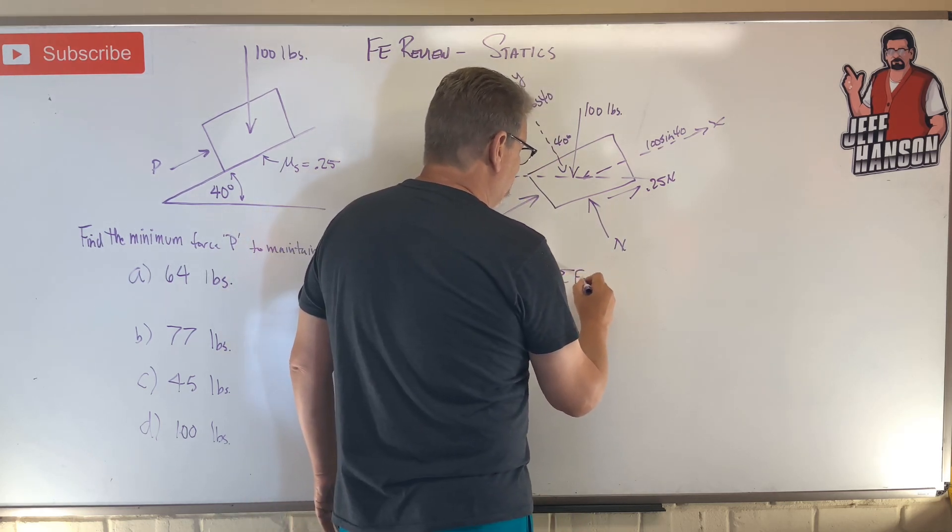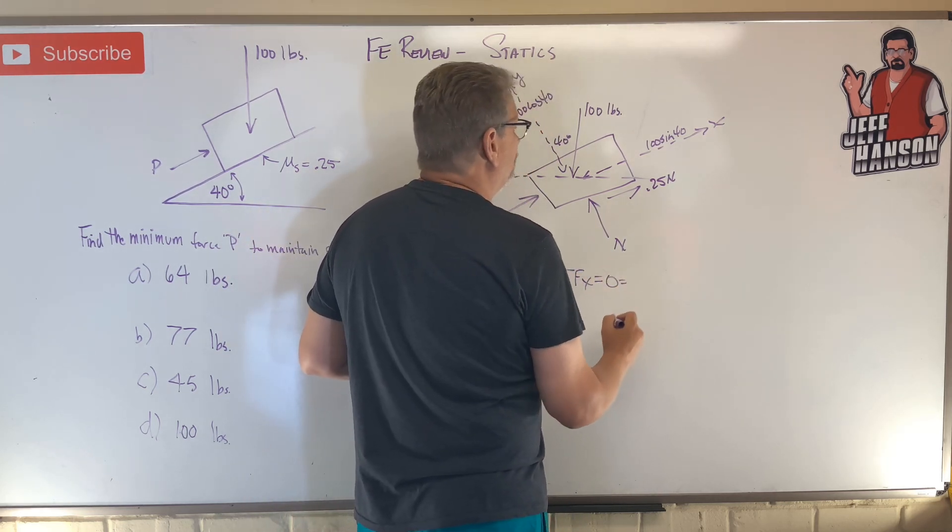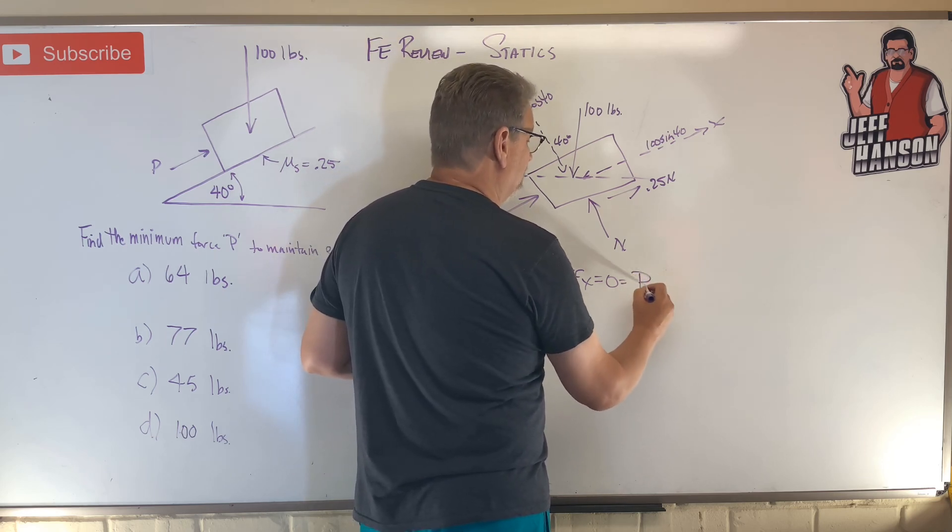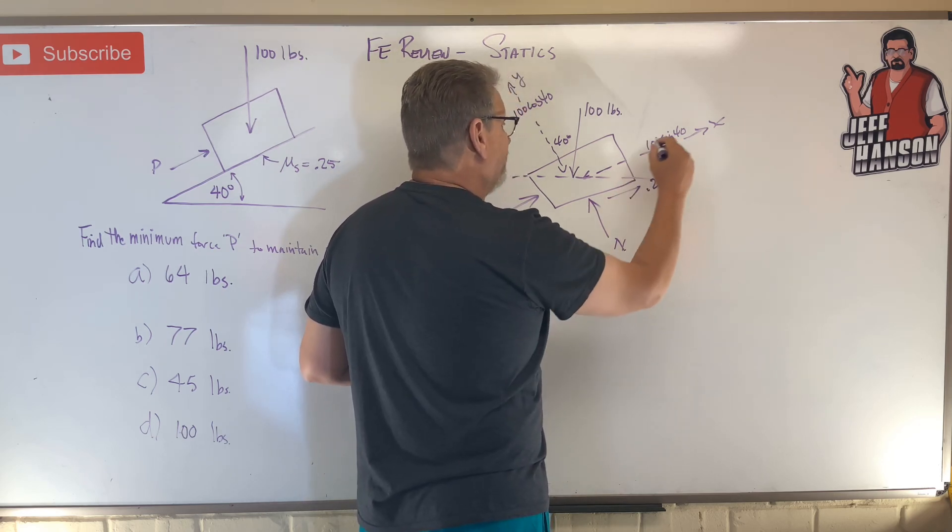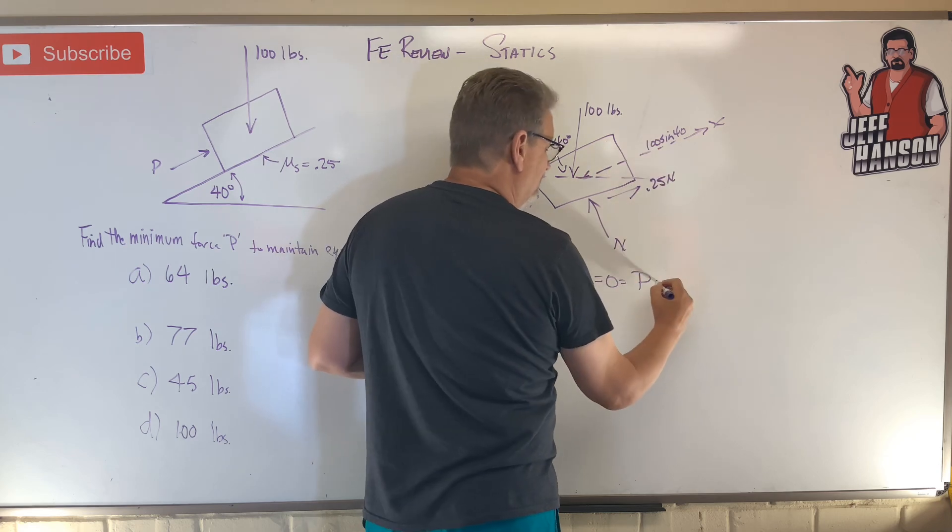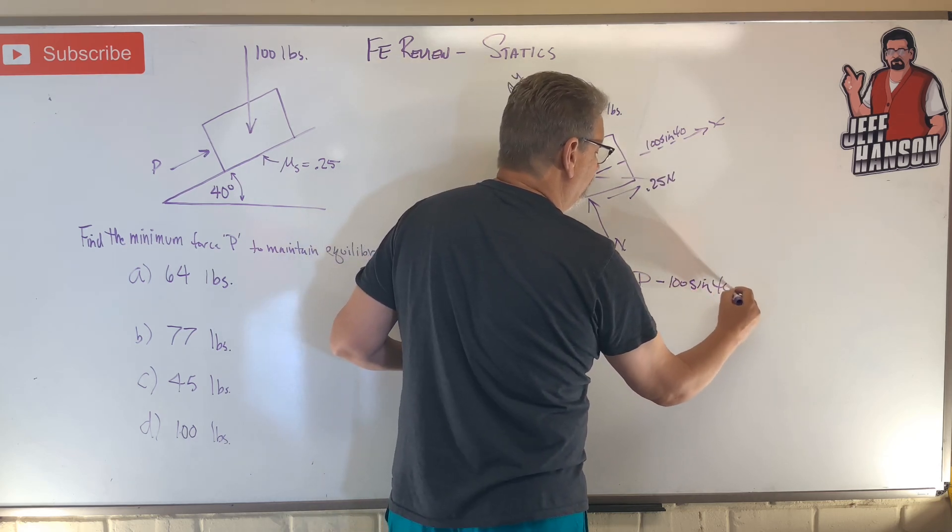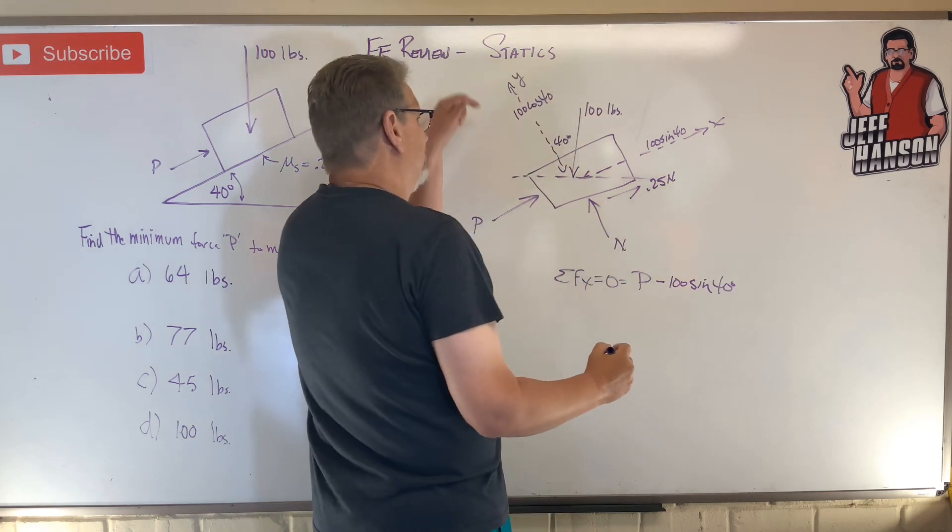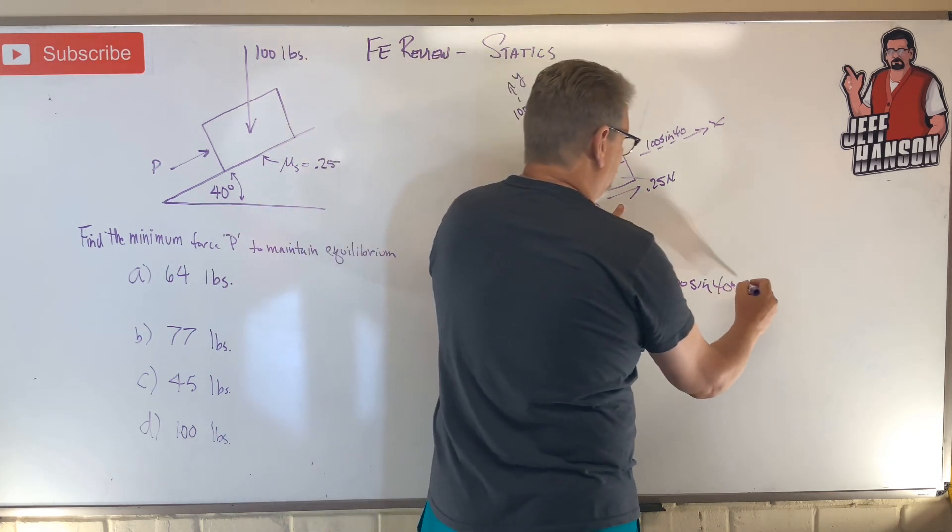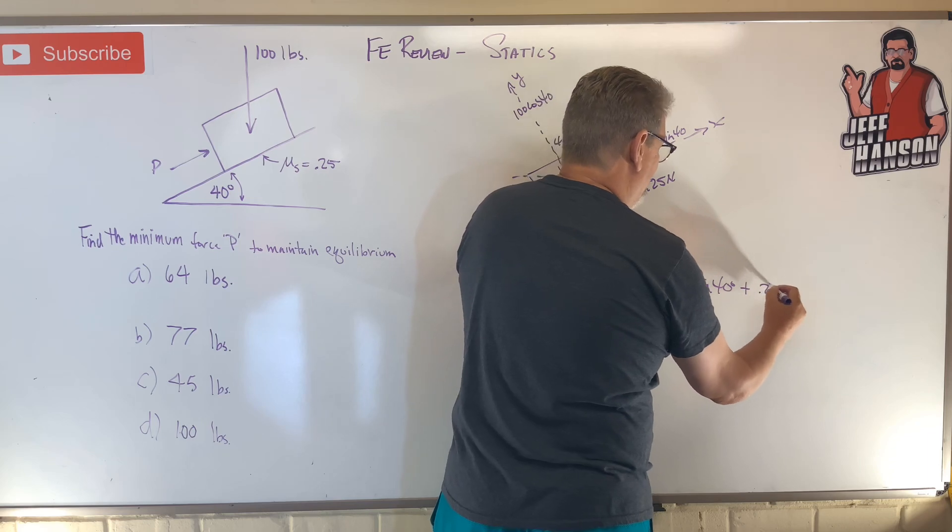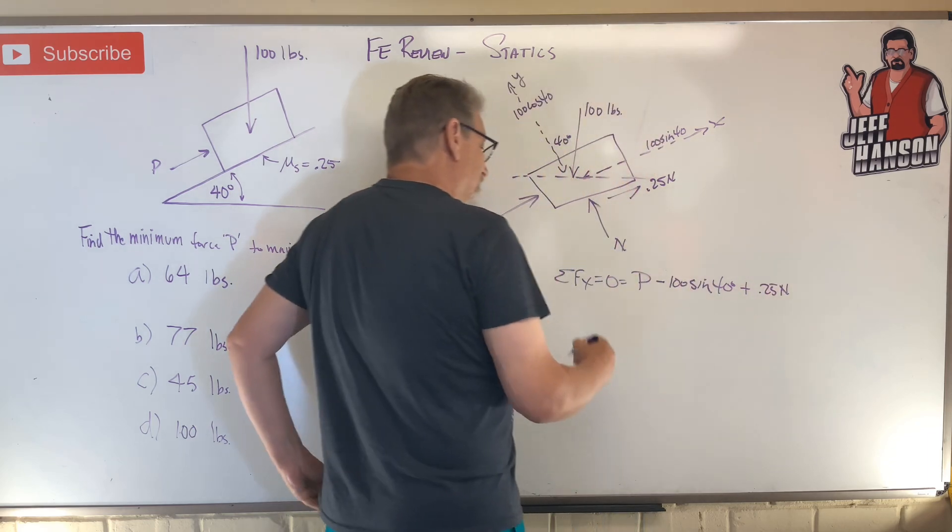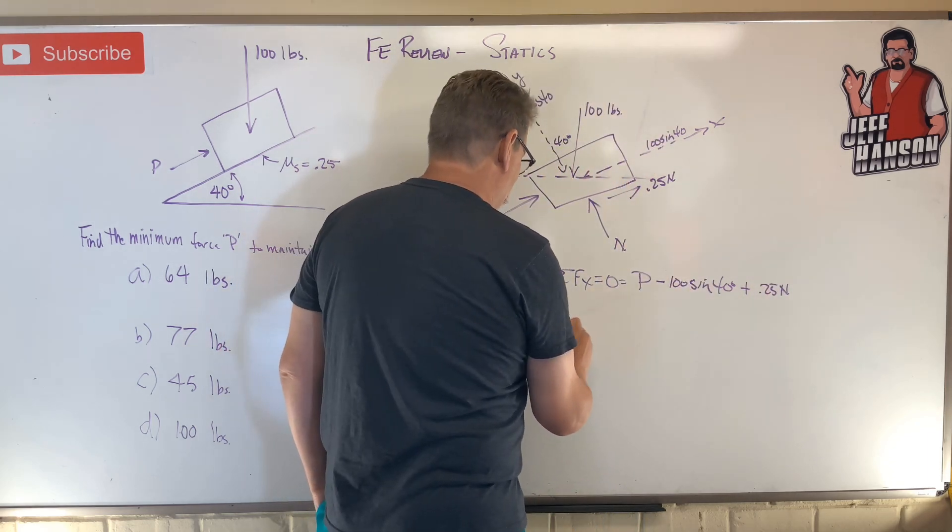So sum of the forces in the X, what do I have? I've got P. I've got that guy there, which is going this way, minus 100 sine of 40. And then I've got, who else? Oh, this guy plus 0.25N. That's no good. It's got too many unknowns in it.